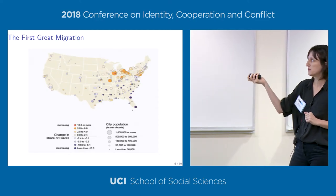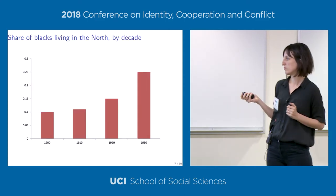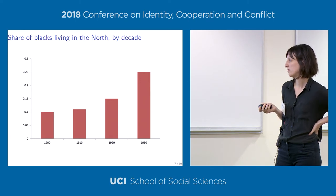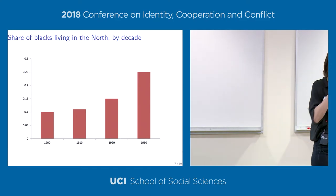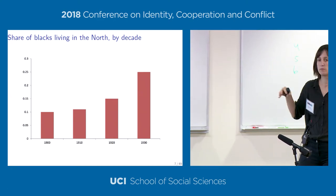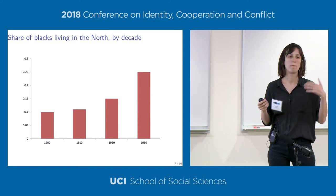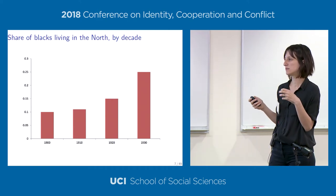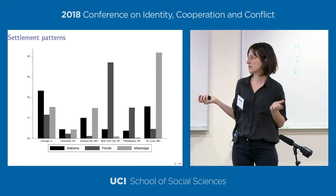Though most blacks still lived in the South during this period, the share living in the North rose from about 10% in 1900 to around 25% in 1930. What's interesting for our empirical strategy is that migration patterns—not just for blacks but migrations generally—show a predictability in where immigrants go, which can be predicted by where their compatriots had gone before. Settlement patterns are persistent and can be disentangled from purely economic factors attracting immigrants.